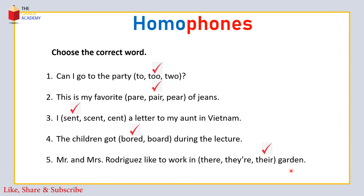तो हमने देखा कि homophones English में ऐसे words हैं जिनकी sounds same हैं — homo means same and phones means sound। Homophones ऐसे words हैं जिनकी sounds same होती हैं जबकि इनके spellings और meanings different होते हैं। जैसे to/too/two, pair/pear/pare, sent/scent/cent, board/bored, there/their/they're।